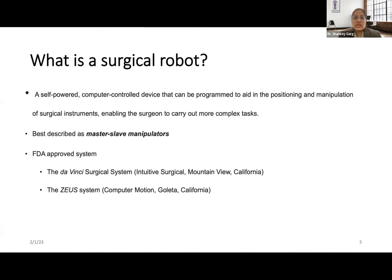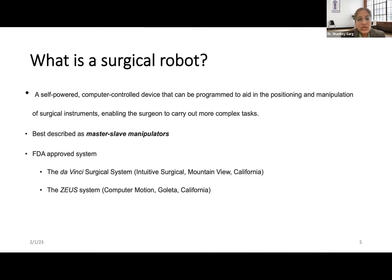A surgical robot is a self-powered, computer-controlled device programmed to aid in positioning and manipulation of surgical instruments, enabling the surgeon to carry out complex tasks inside the patient's body. It is best described as a master-slave manipulator. The FDA has approved two systems: the da Vinci surgical system by Intuitive Surgical, and the ZEUS system by Computer Motion. However, Computer Motion was later acquired by Intuitive Surgical and ZEUS production was stopped, so currently the only available robotic system worldwide is the da Vinci system.